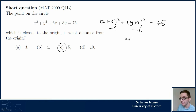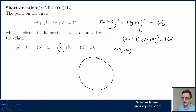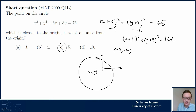Simplifying, this is a circle with radius 10 and center (−3, −4). In most geometry questions I want to draw a picture. This circle has center at (−3, −4) and radius 10 - radius 10 is huge - so large that the origin is somewhere inside this circle. The origin is only a distance of five away from this center point, and the radius is 10.